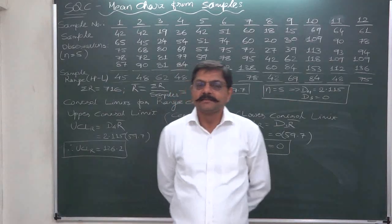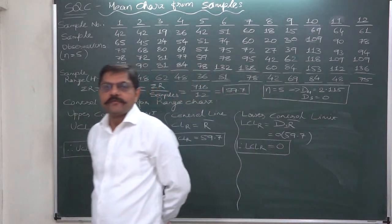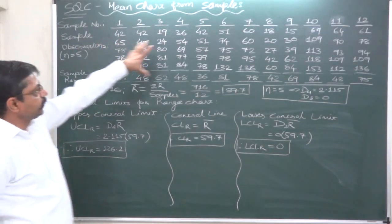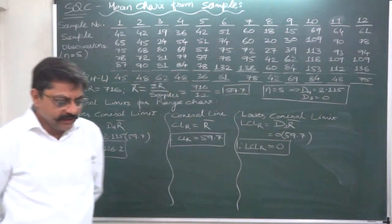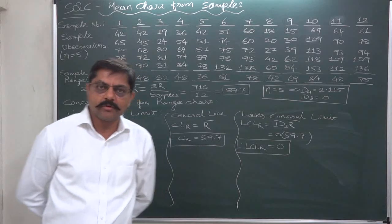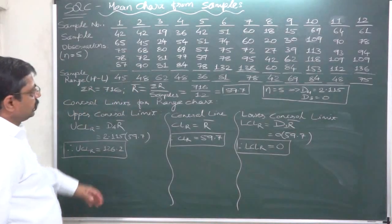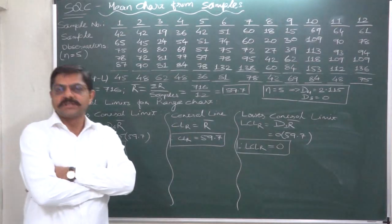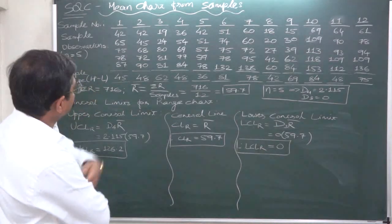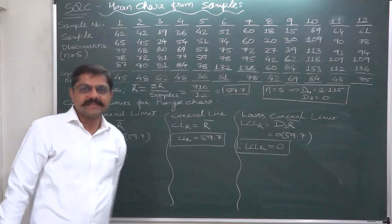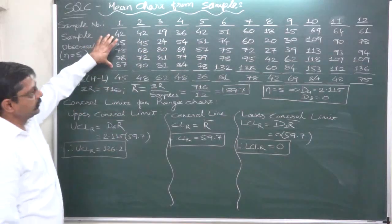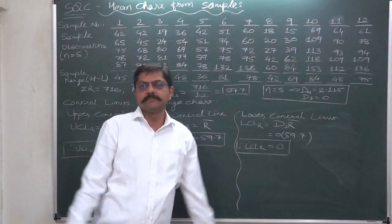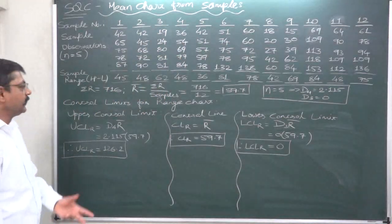Hello and welcome back. This is part 2 of the discussion of the case where we have information about 12 samples. In the first part we discussed how to construct a mean chart from the sample information. Now we are going to discuss how to construct a range chart from the information about samples. We have information about 12 samples and the sample size is 5.